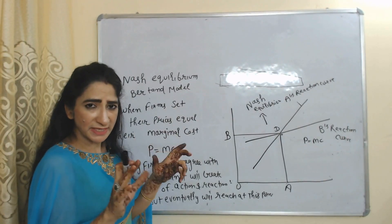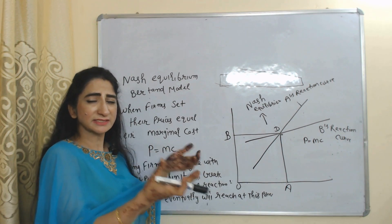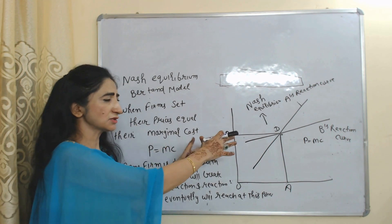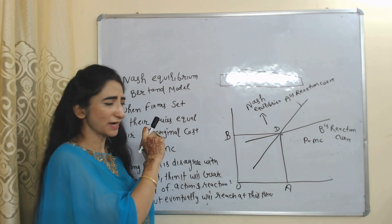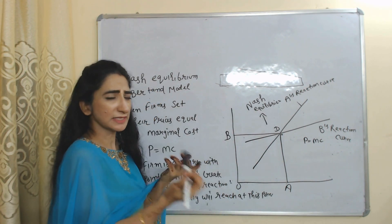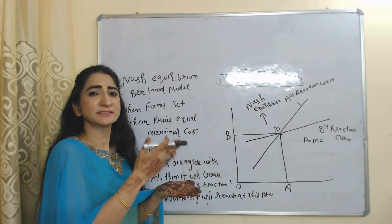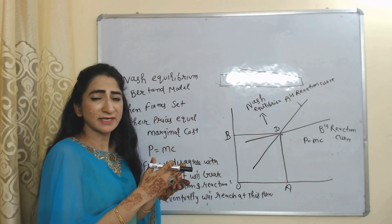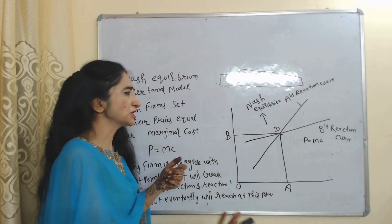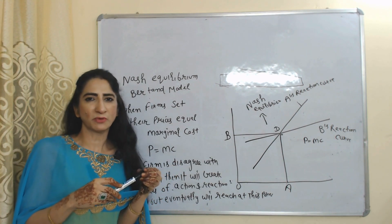At Nash equilibrium, firms will not compete with each other because they are already taking the minimum price and cannot reduce further. Prices of both firms are equal to each other at this point, so D is called the stable equilibrium point or Nash equilibrium point. If any firm deviates from this point, it will create a series of actions and responses that will eventually return to point D. This is the Bertrand Oligopoly Model.